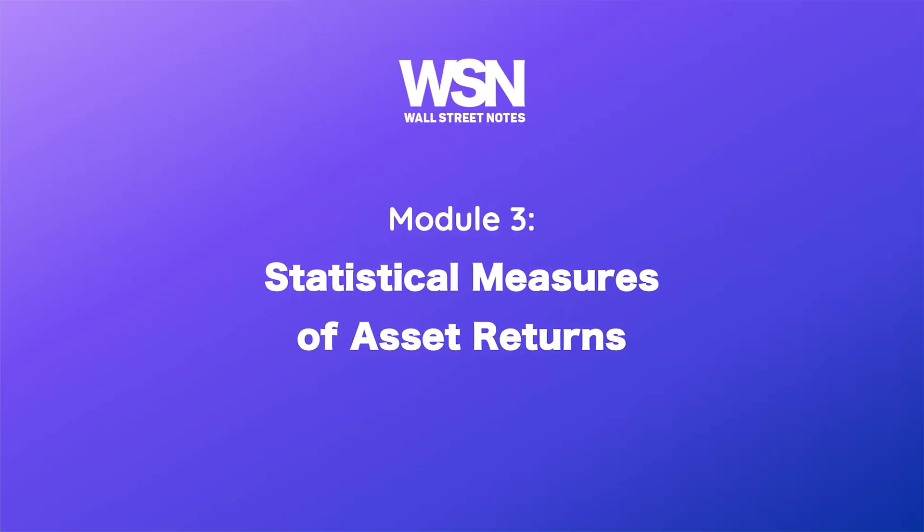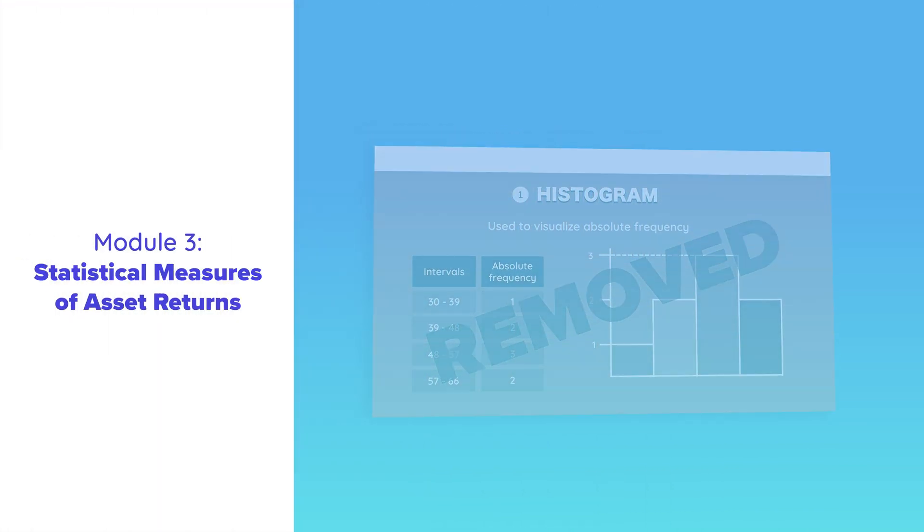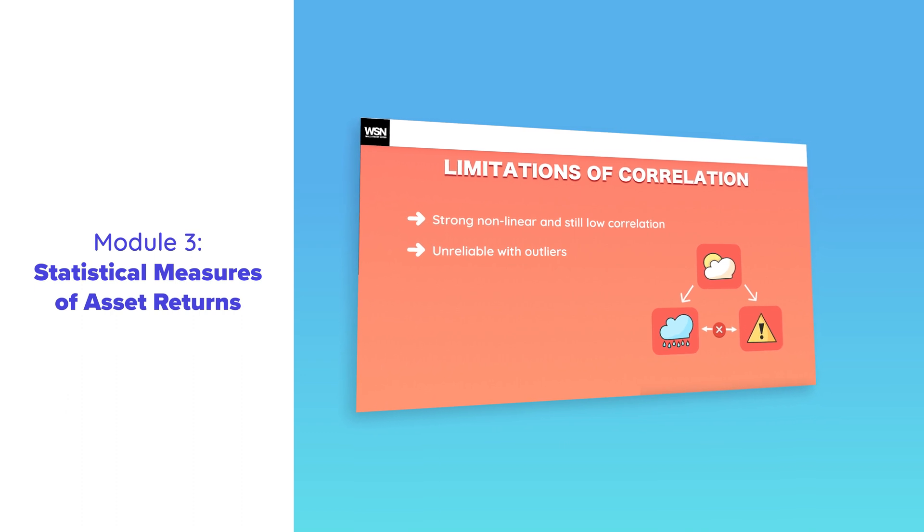Statistical Measures of Asset Returns: Some content has been removed, like the Data Visualization section, and the section on Correlation is covered in more detail this year.